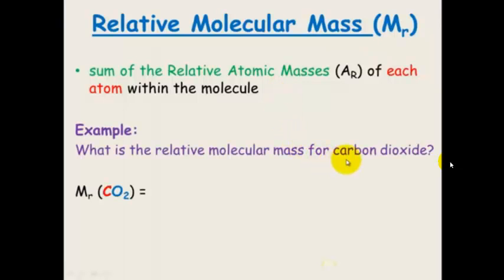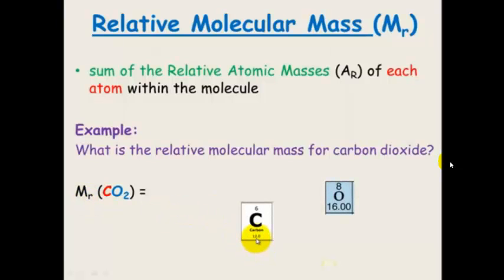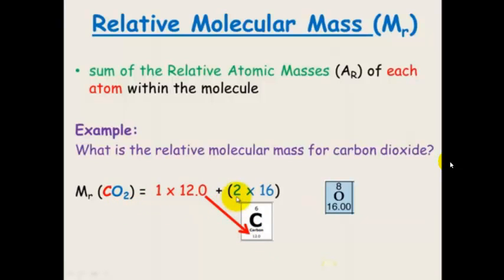Let's look at an example of carbon dioxide. Carbon dioxide is made up of one carbon atom and two oxygen atoms. To find the relative molecular mass of this compound, all we need to do is look at the mass number of carbon and the mass number of oxygen, because that will give the relative atomic masses. So we've got one carbon, so it's 1 × 12, because that's the mass number. Two oxygens, so 2 × 16, because sixteen is the mass number of oxygen. We add those together: 12 plus 32, and we get 44.